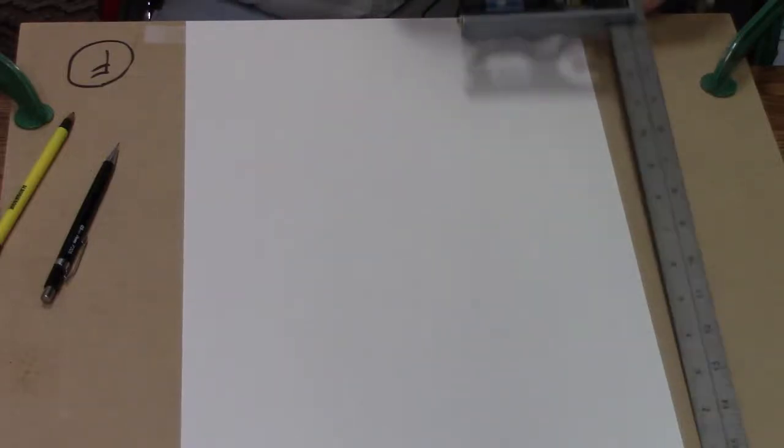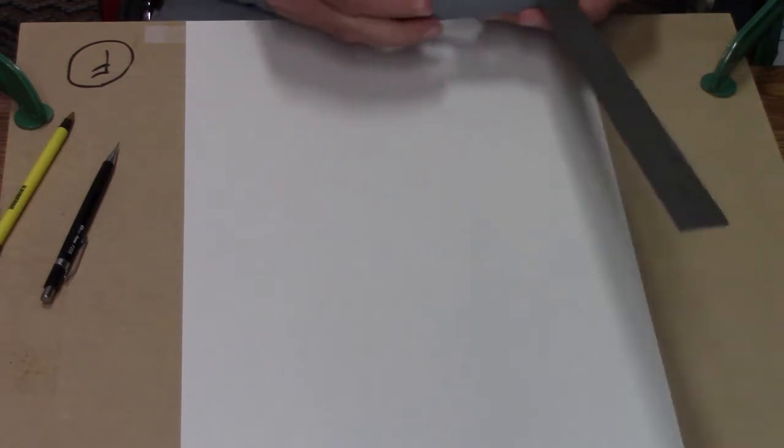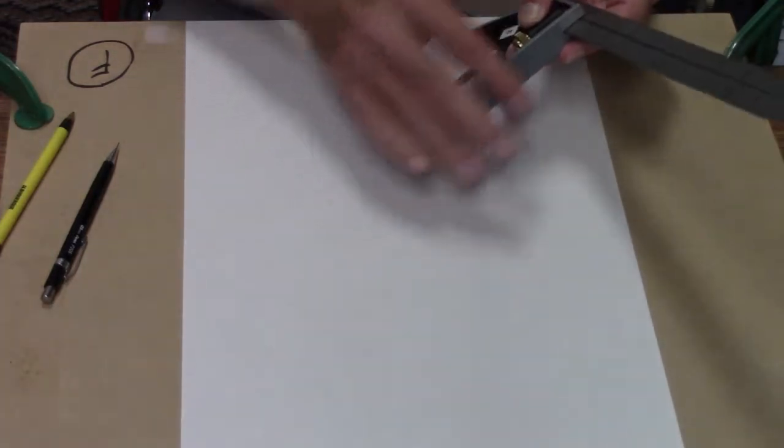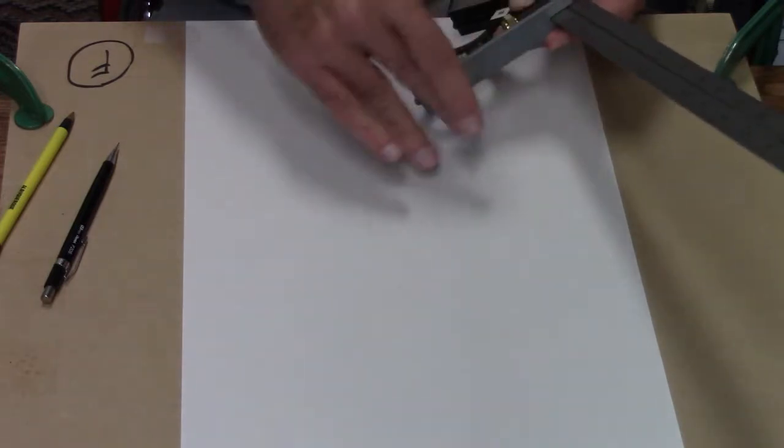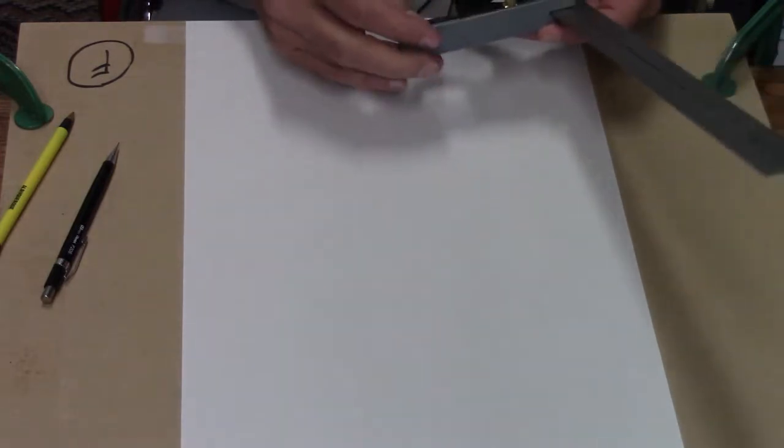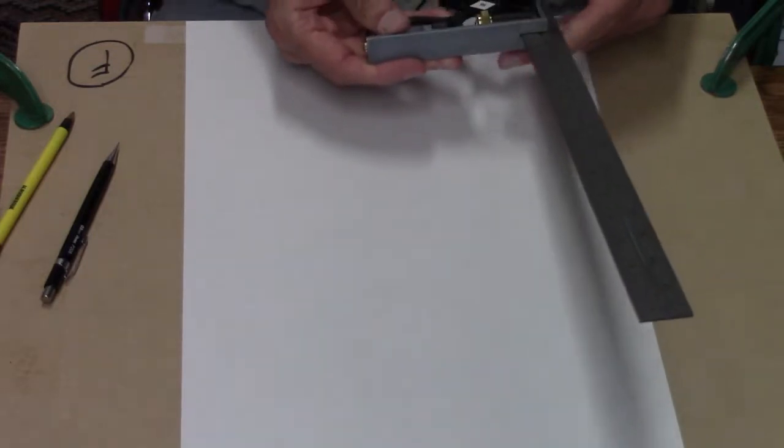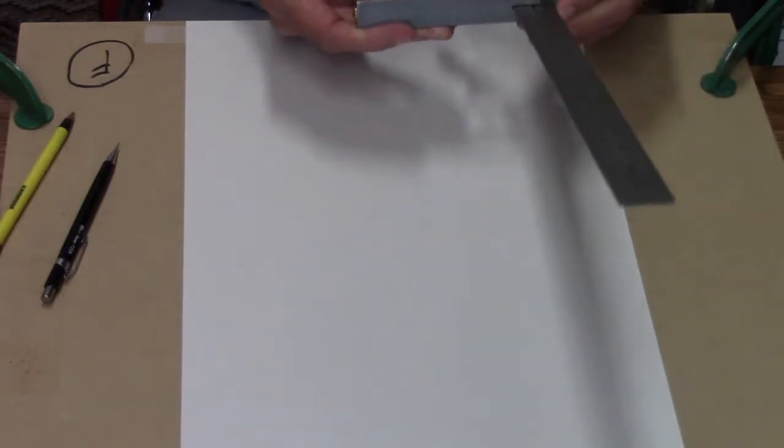There are quite a few videos on YouTube that show how to check the squareness of a combination square, at least for measuring outside angles such as this. I'm going to demonstrate that while the basic procedure is correct, the suggestions are incomplete.